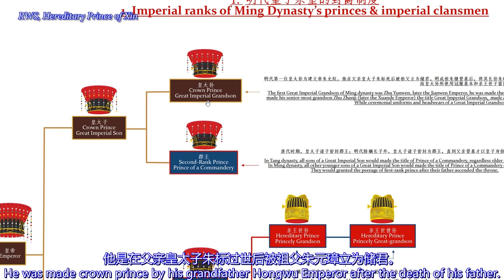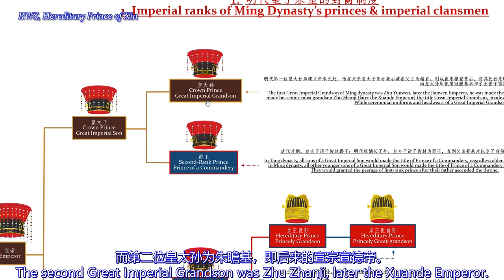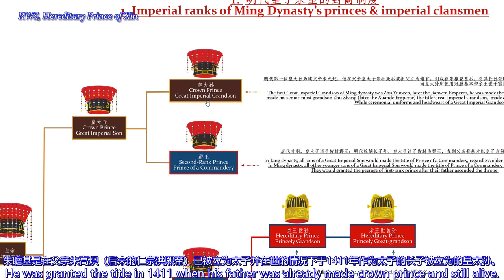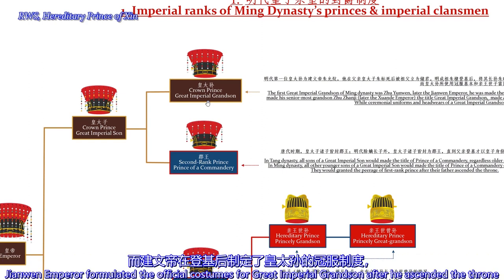He was made Crown Prince by his grandfather, the Hongwu Emperor, after the death of his father. The second Great Imperial Grandson was Zhu Zhanji, later the Emperor. His situation was different — he was granted the title in 1411 when his father was already Crown Prince and still alive. The Xuande Emperor then formulated the official costumes for the Great Imperial Grandson after he ascended the throne.